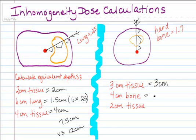4 centimeters of bone through hard bone is actually going to be 6.8 centimeters. And then your 2 centimeters of tissue is still going to be 2 centimeters. So your effective depth is 11.8 centimeters with homogeneity factor versus 9 centimeters you would have used initially. You can see how using homogeneity factors in calculations is more accurate than not using them.